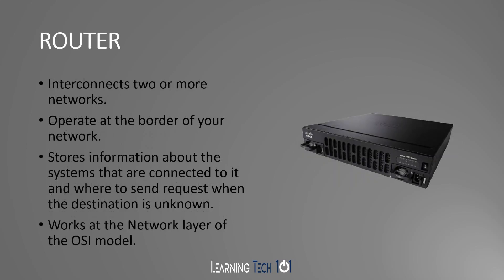Next we have your router. This interconnects two or more networks and operates at the border of your network — it's the last device before traffic gets outside of your network. It stores information about the systems connected to it and where to send requests when the destination is unknown. This is where all your routing decisions occur — it keeps track of different networks and makes routing decisions based on that.